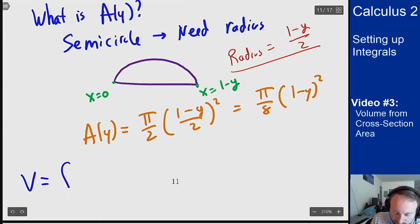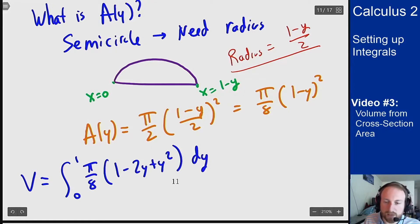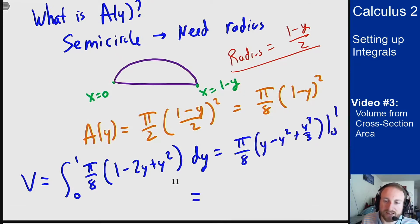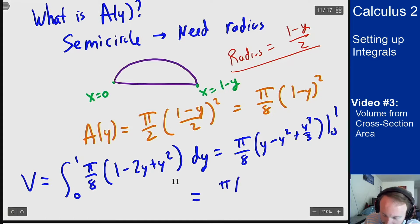The volume should be the integral from 0 to 1 of pi over 8 times (1 minus 2y plus y squared) dy. We can integrate and solve. If I plug in 0 I just get 0, and if I plug in 1 I just get 1 third inside. So I get pi over 24.